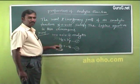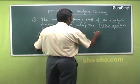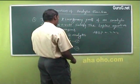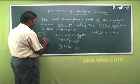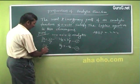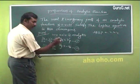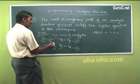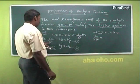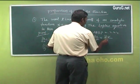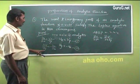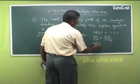Differentiate equation 1 (u_x = v_y) partially with respect to x. We get ∂²u/∂x² = ∂²v/∂x∂y. Take this as result (i).